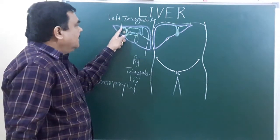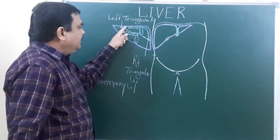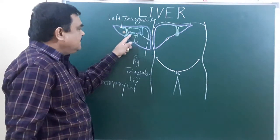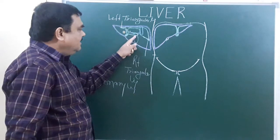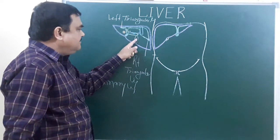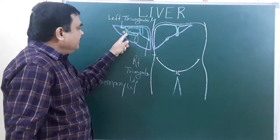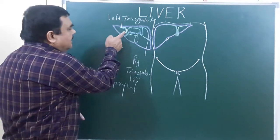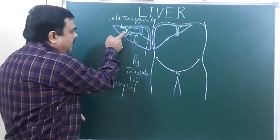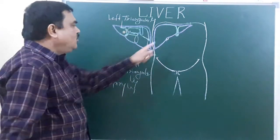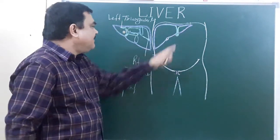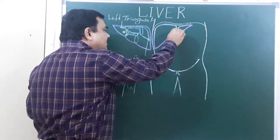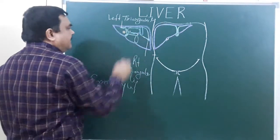Here, the left triangular ligament — this area is bare. The porta hepatis area is bare. The fossa for gallbladder — this area is bare. And in other areas where there is a line of reflection of the peritoneum, this area is also bare.